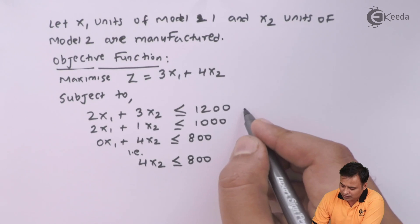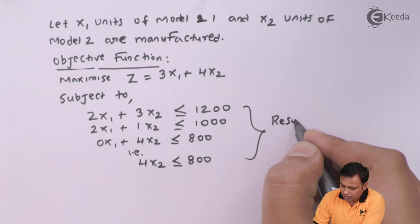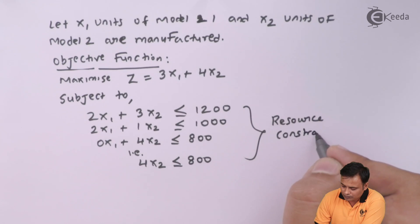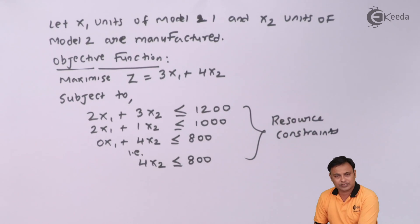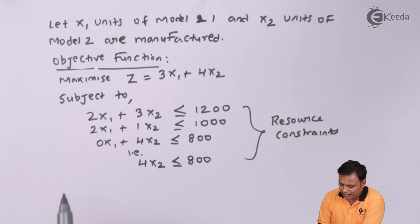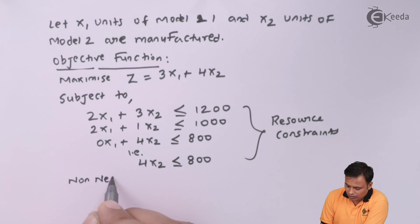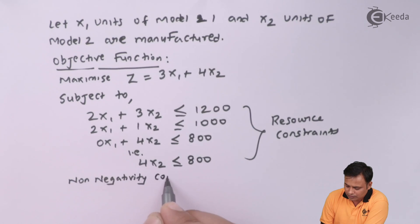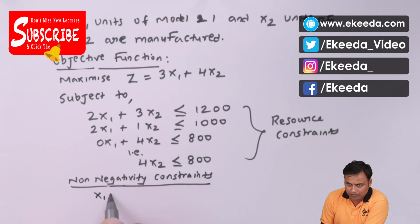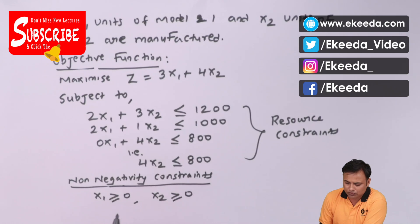So these are my three resource constraints for resistors, capacitors, and chips. And now the last part: the non-negativity constraints. Here it will be x1 ≥ 0 and x2 ≥ 0.